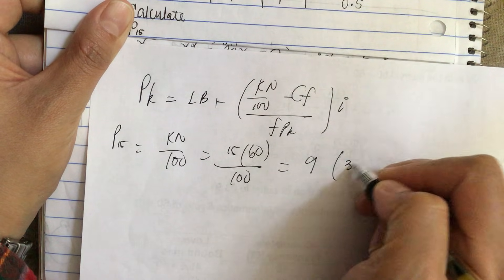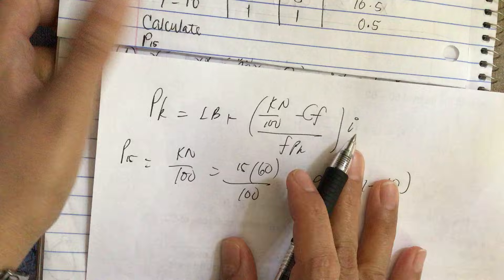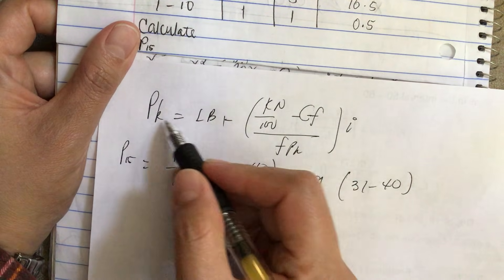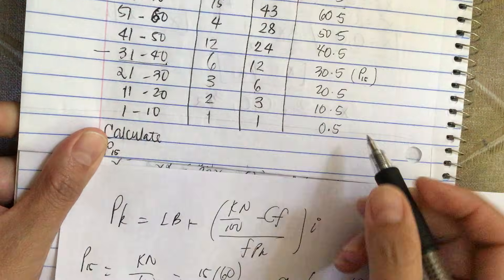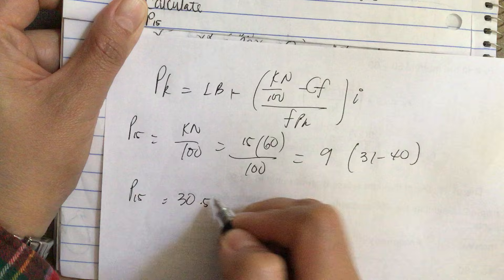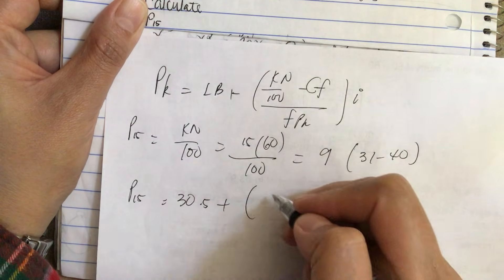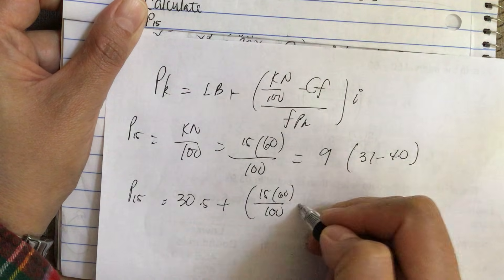It's 31 to 40, the interval. So now let's plug in our numbers into the equation. P of 15 is equal to lower boundary which is 30.5 plus k (15) times n (60) all over 100 minus cf.